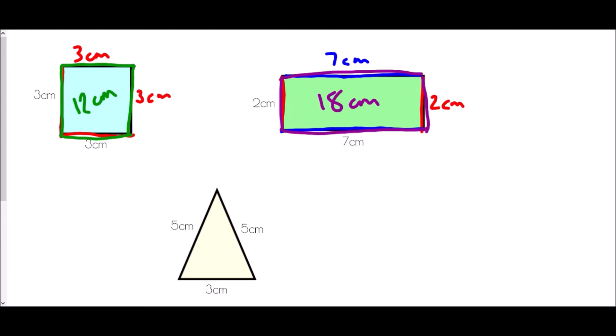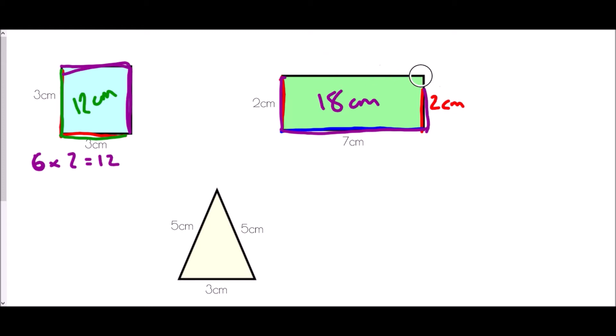With both of those we could have used a slightly different method. For the square: three plus three is six, and since the other sides match, six times two is twelve. For the rectangle: two plus seven is nine, and since the other two sides match, nine times two is eighteen. We get the same answer either way.